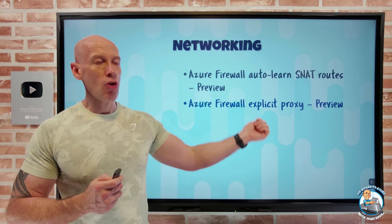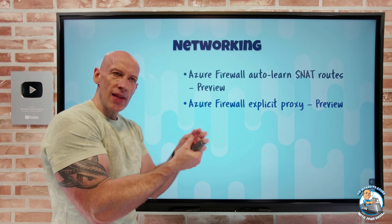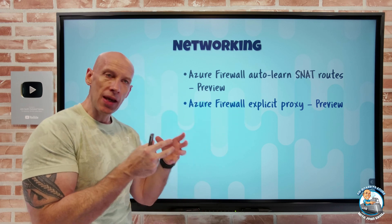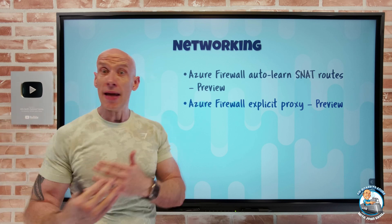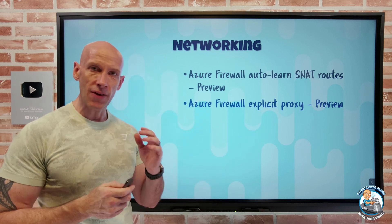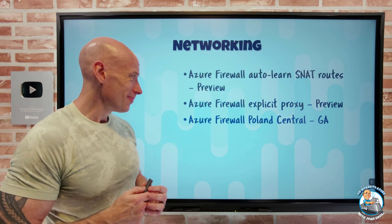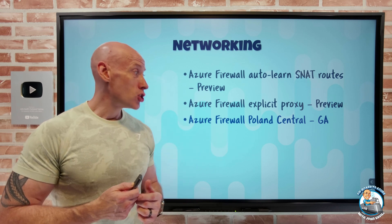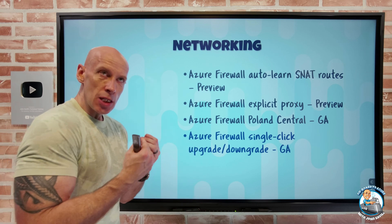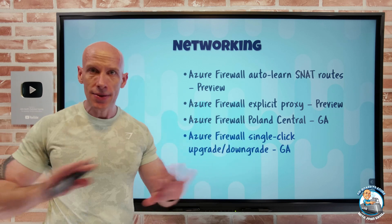Azure Firewall explicit proxy is now in preview. This enables you to specify the private IP of the Azure Firewall in applications or your web browser as the proxy to use — all outbound flow goes to the firewall's private IP, which then applies its rules and controls outbound traffic. Also, Azure Firewall is now GA in Poland Central, and there's a new single-click SKU change — both standard to premium and premium to standard — with zero downtime.